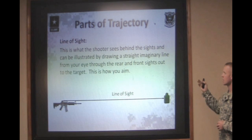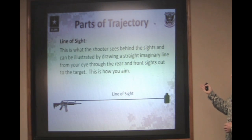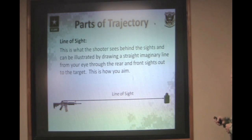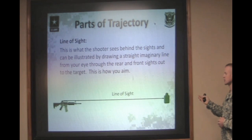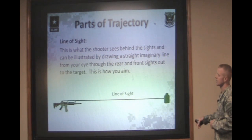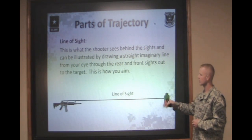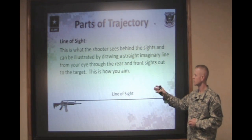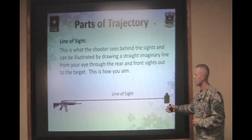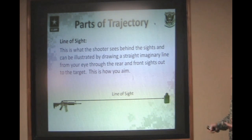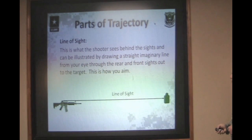Now we discuss line of sight. What a shooter sees behind the sights can be illustrated by drawing a straight line from the rear sight, to the front sight, to the target. This is nothing more than your line of sight — what you're going to see through the sights.